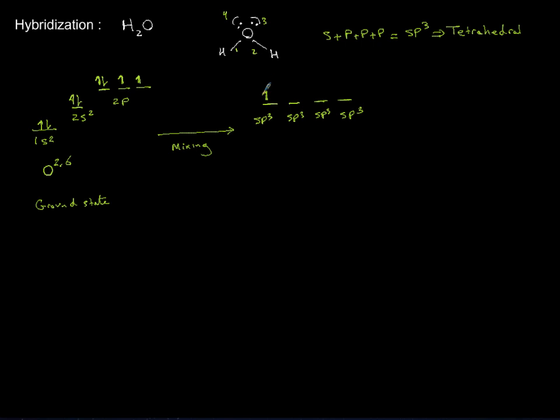Now the first two will have lone pairs in them and the last two only have one electron. So the lone pairs, let me just box this and say this is my hybridized, and let me take a red arrow and say look this here is this lone pair. This lone pair is this sp3, sp3.